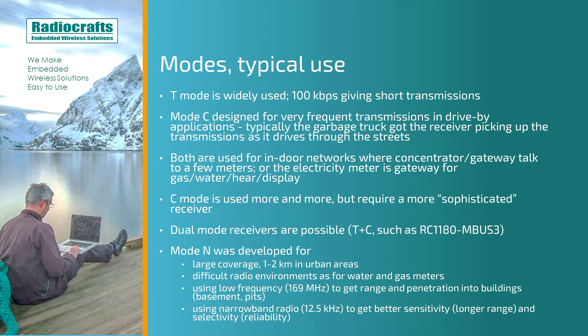The C mode is being used more and more, but requires a more sophisticated receiver due to the NRC coding. It is also possible to have a dual-mode receiver that can receive either T mode or C mode — an example of such a receiver is the RC1180 MBUS3 module.